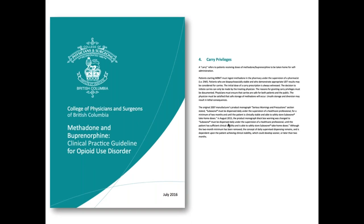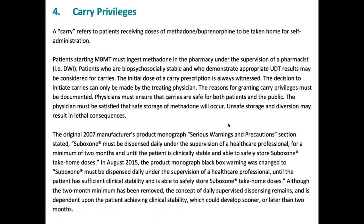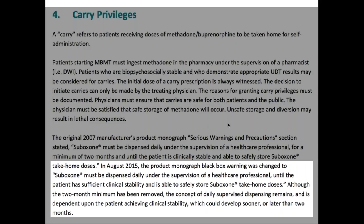The CPSBC methadone buprenorphine prescribing guidelines note that with methadone, carries are very regimented because methadone can be potentially fatal if taken in excess or consumed by accident by family members. With buprenorphine naloxone, it's significantly safer, so providing carries can be more flexible and liberal — really at the prescriber's discretion.